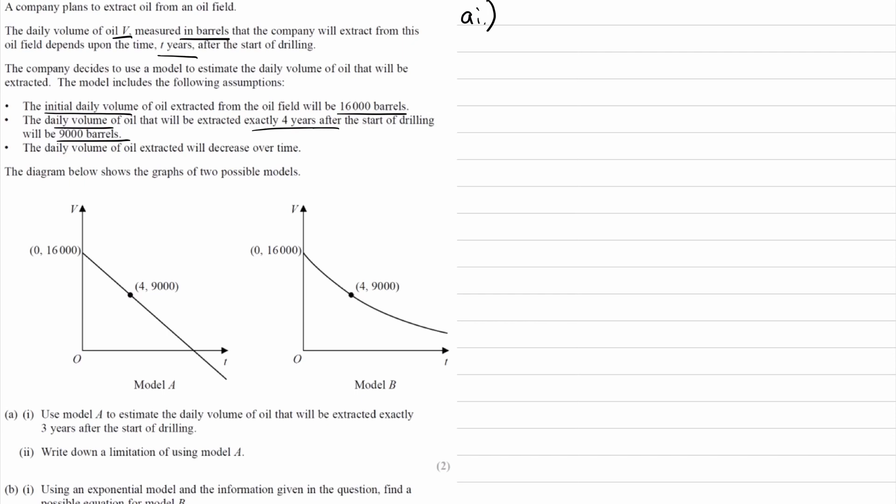For A part one, we're using our model to estimate the daily volume of oil that will be extracted exactly three years after the start of drilling. The hint for this part would be that Model A is the straight line, so you want to find an equation for the straight line.